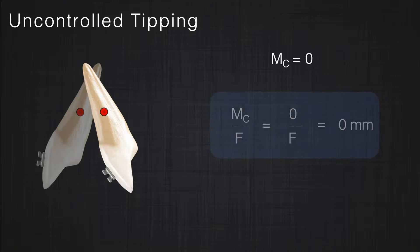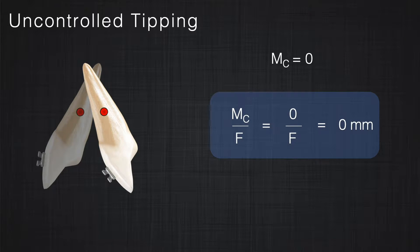Now, how much was the magnitude of the couple applied here? Remember, I'm not talking about the moment of the force — I'm asking whether any additional couple was applied. The answer is no: the force was placed at the bracket or incisal edge with no additional couple, causing uncontrolled tipping. So the magnitude of the couple in the system was zero, and the couple to force ratio is zero divided by the force — mathematically, the couple to force ratio equals zero.